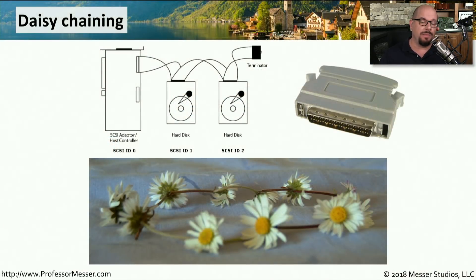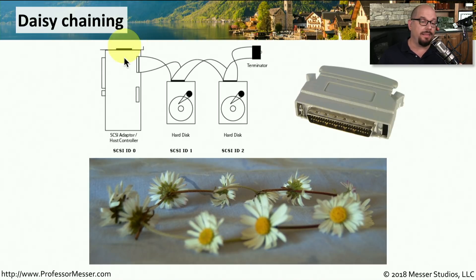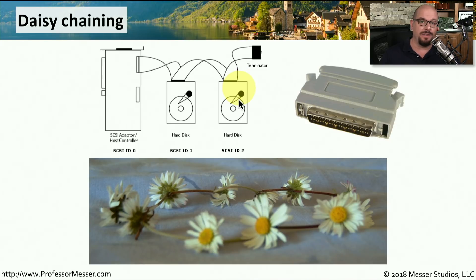This daisy chain is commonly seen with older style SCSI, where you might have the SCSI controller as SCSI ID 0 with a single cable coming out, plugging into a hard drive, then another hard drive, then another external drive, and so on. You would then terminate that entire daisy chain bus by either having a physical terminator on the end or having it internally terminated inside the last device.